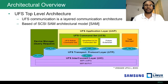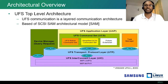This is the top-level architecture view of UFS. UFS communication is a layered communication architecture based on the SCSI SAM architecture model. At the top we have an application layer which contains UFS command sets — both UFS native command sets and simplified SCSI command sets. This layer also contains a task manager and a device manager. The next layer is the UFS Transport Protocol layer, or UTP layer, responsible for all transactions in and out of UFS. The last layer is the UIC layer — the interconnect layer — which consists of MIPI UniPro protocol and MIPI M-PHY as the physical layer.